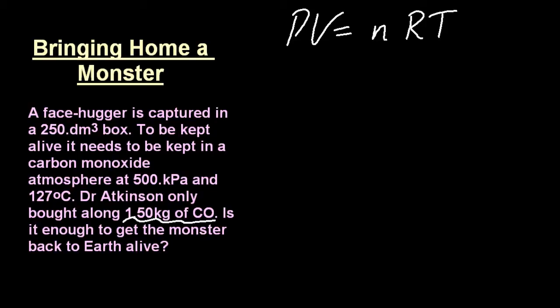Now there seems to be no mass in the ideal gas equation, but it's hidden in the term n. n is the number of moles, and that is mass over molar mass.